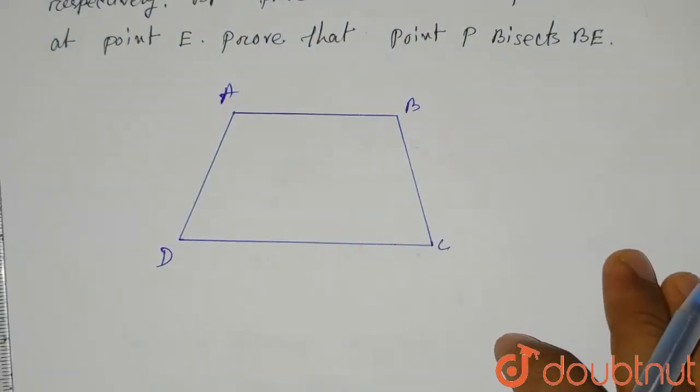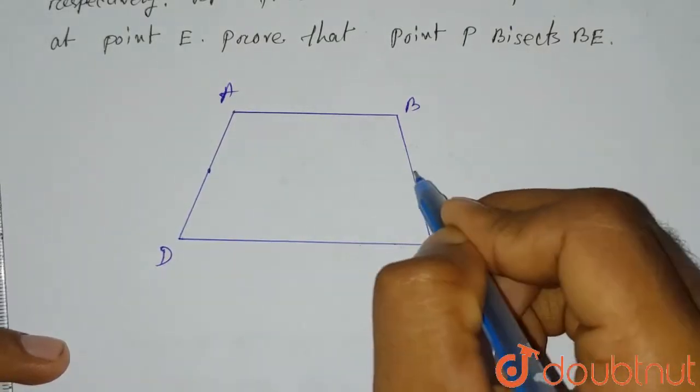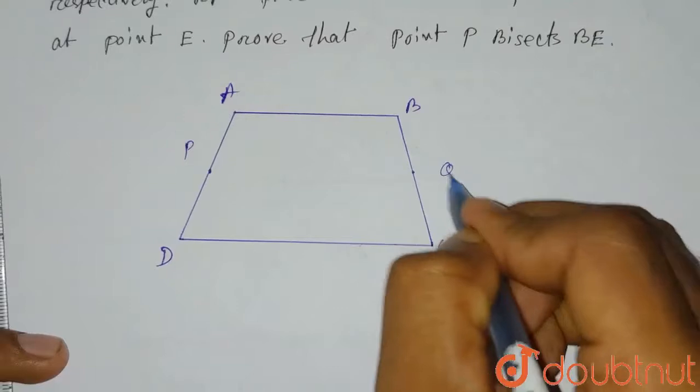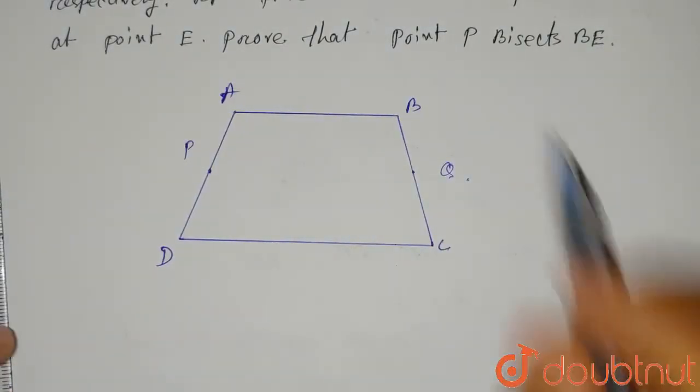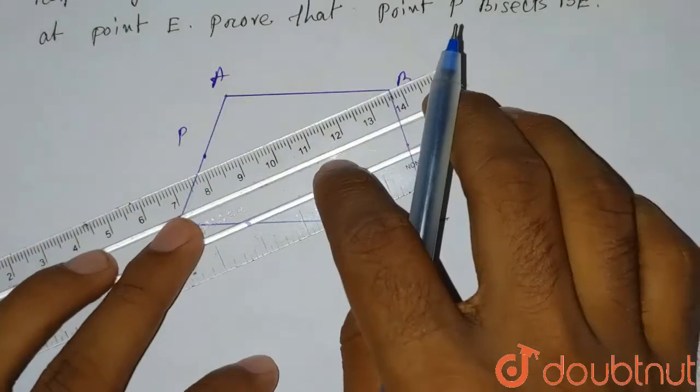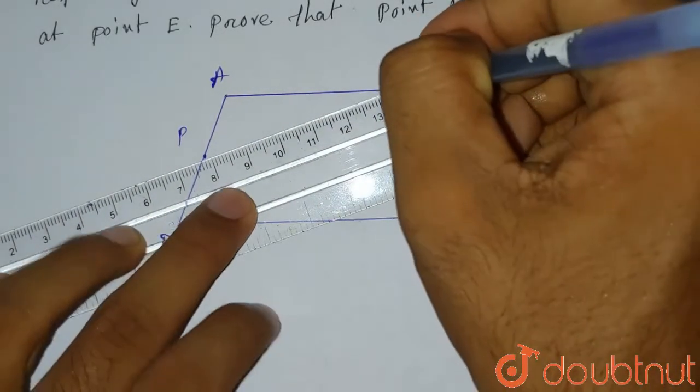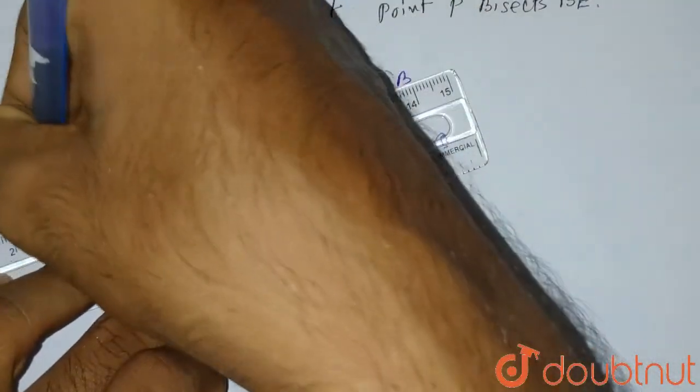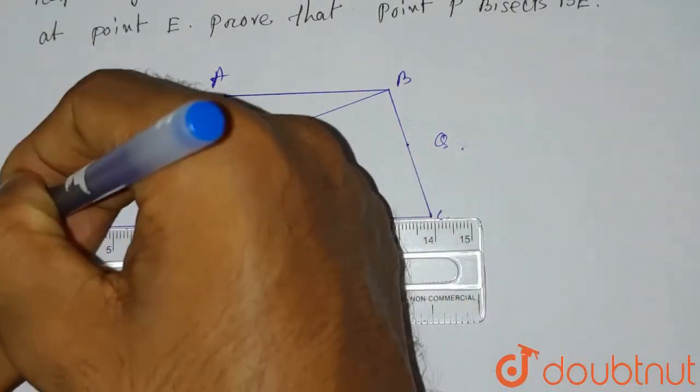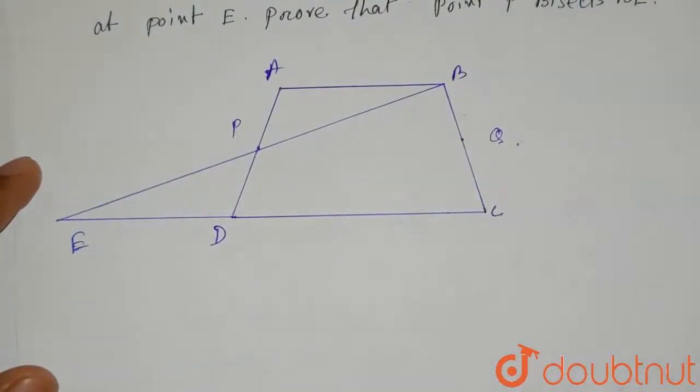Now here it is said that P and Q are the midpoints of AD and BC. For AD it's P and BC it's Q. So this point is P, this point is Q. BP produced meets CD produced at point E. So BP will meet CD. If we join them, this will look like this. This will meet CD at point E. This is the point E.